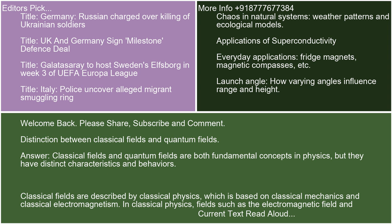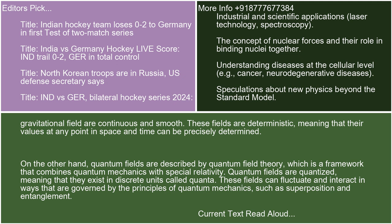Classical fields and quantum fields are both fundamental concepts in physics, but they have distinct characteristics and behaviors. Classical fields are described by classical physics, which is based on classical mechanics and classical electromagnetism. In classical physics, fields such as the electromagnetic field and gravitational field are continuous and smooth. These fields are deterministic, meaning that their values at any point in space and time can be precisely determined.